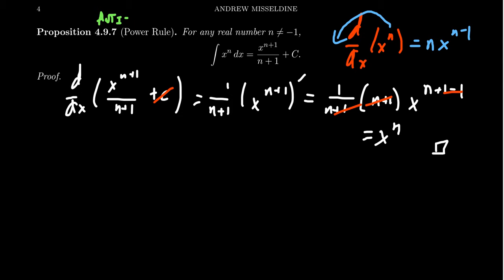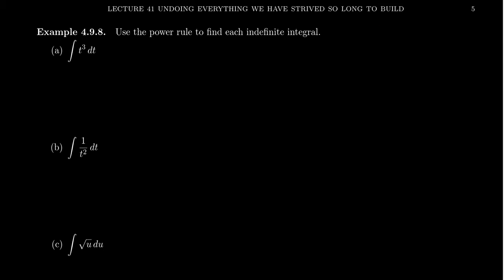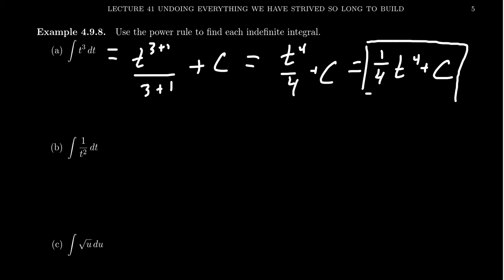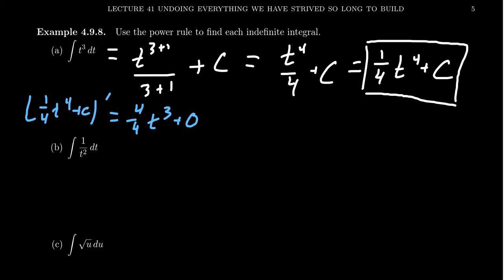This shows the anti-power rule gives us the correct anti-derivative. Let's look at some examples. By the anti-power rule, if we take the integral of t cubed, we increase the power by one — three plus one — and divide by that new power, three plus one. Don't forget your arbitrary constant. Simplifying, you get t to the fourth over four plus a constant. You can verify: take the derivative of one-fourth t to the fourth plus c, and you get four over four times t cubed, which simplifies to t cubed.